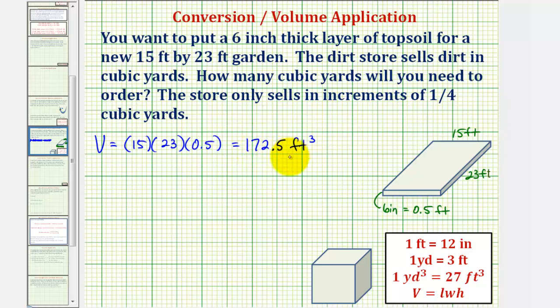And now we need to convert this to cubic yards and determine how much we need to order. We're told here that one cubic yard is equal to 27 cubic feet, but let's take a look at why.